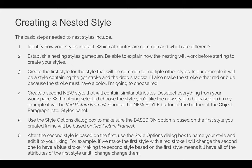After the second style is based on the first, use the style options dialog box to name your style and edit it to your liking. For example, if we made the first style with a red stroke, I will change the second one to have a blue stroke. Making the second style based on the first means it will have all of the attributes of the first style until I change or break those connections. So the second style is going to be red, with a solid stroke and a drop shadow. But as soon as I tell it that the stroke color should be blue, I will disconnect that connection. From then on, the red stroke and the blue stroke are different, but the stroke thickness, the rounded corners, and the drop shadow will all remain linked if I change them in the original style.